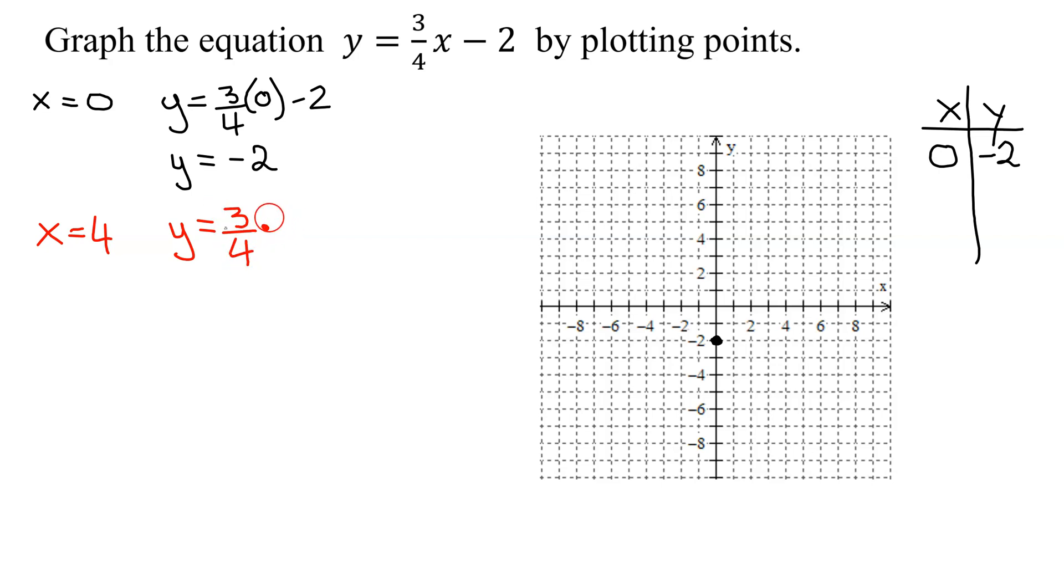Since this is a fraction, I'm going to turn 4 into a fraction by dividing it by 1. Then don't forget the minus 2. The reason we pick multiples of 4 is that will then reduce away that denominator.